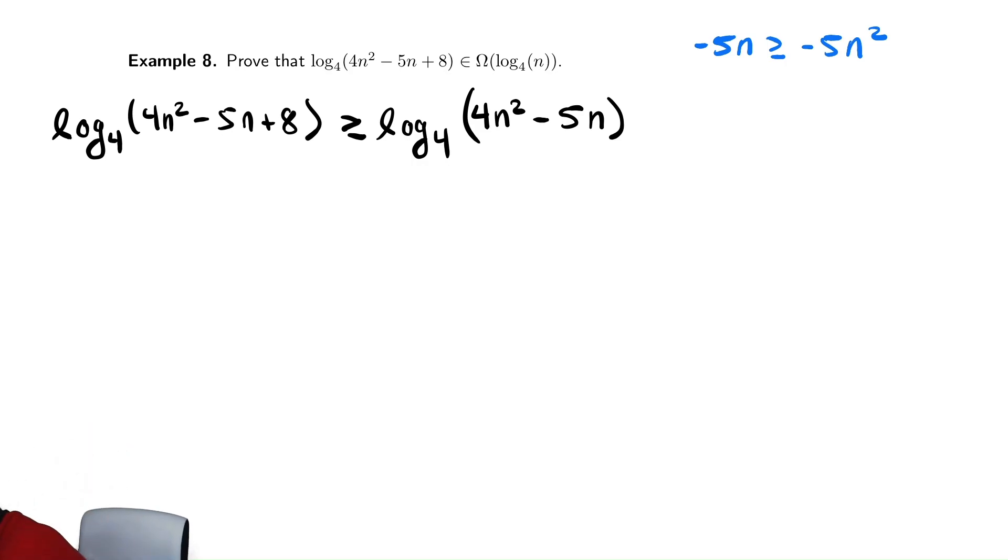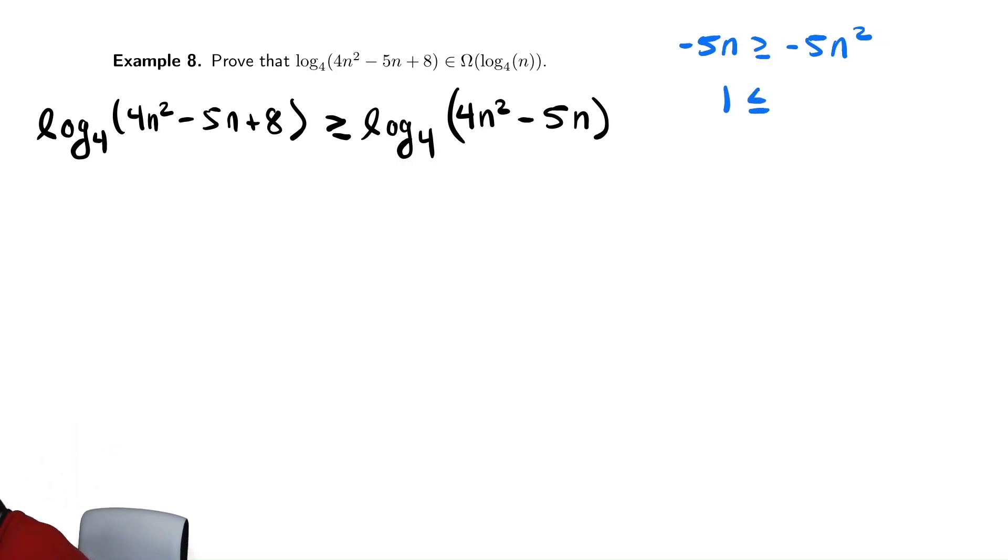If I divide it by negative 5n, I have 1 less than or equal to n. Or, alternatively, n greater than or equal to 1. So, it is true so long as n is big enough. So, this seems okay.